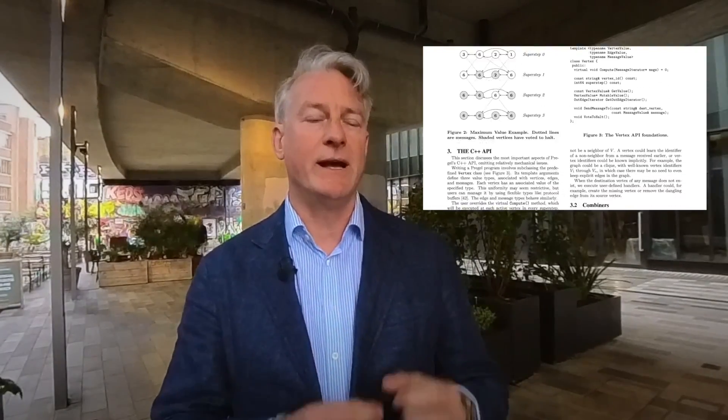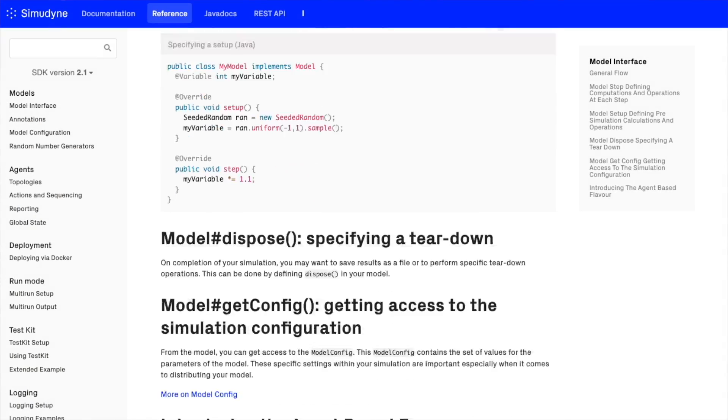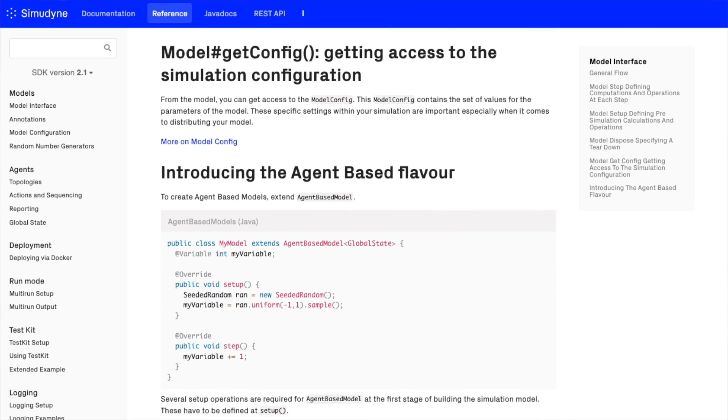Rather than viewing an agent-based model as a spatial model, we would actually recreate the environment as a series of nodes and edges, where the nodes became the agents. We developed this idea and launched what we call a software development kit that allows software developers to build these types of models and put it out there on the internet.